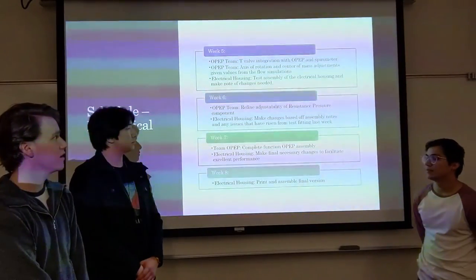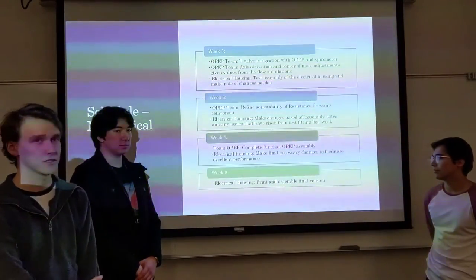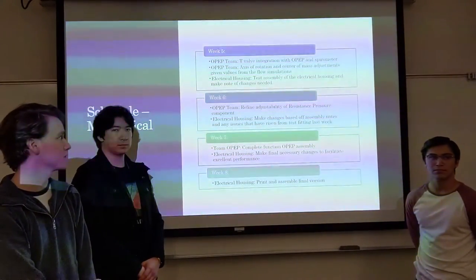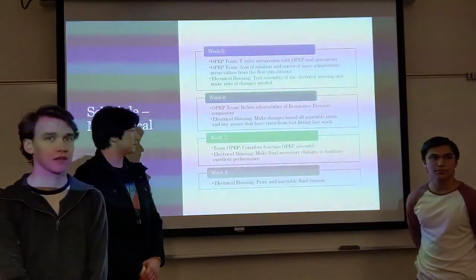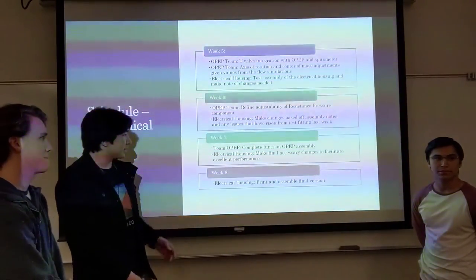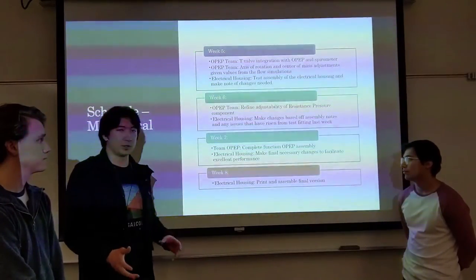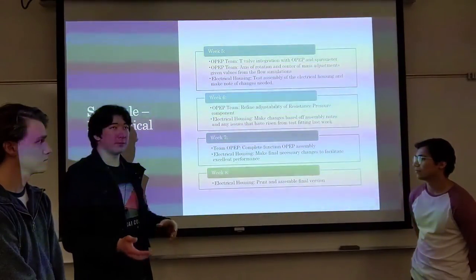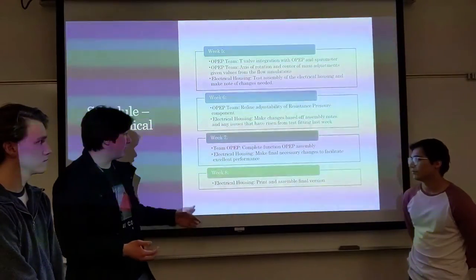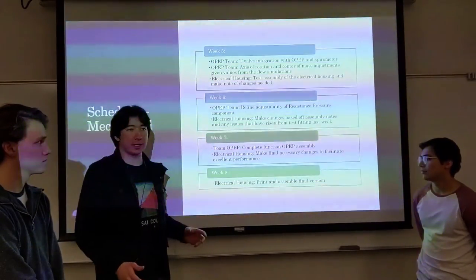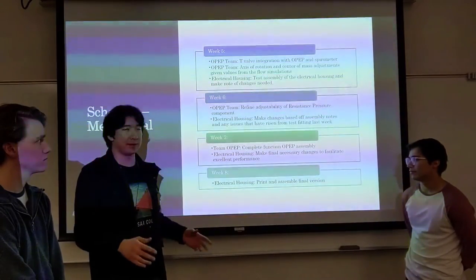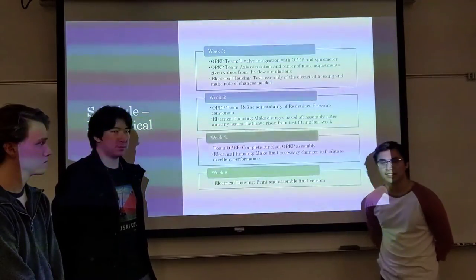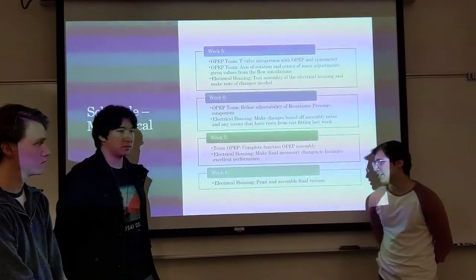For week six, the OPEP team will refine adjustability of the resistance for pressure component, and the electrical housing will make changes based off the assembly notes and issues that have been arisen after the testing previous week. For week seven, the OPEP team will finish the functional OPEP assembly and have a prototype model that is available for use and practical real-life tests. The electrical housing will make any final necessary changes of the electronics portion and final assembly. And week eight, we hope to have the entire electrical housing printed and assembled on this front.